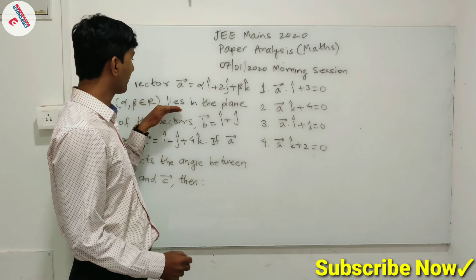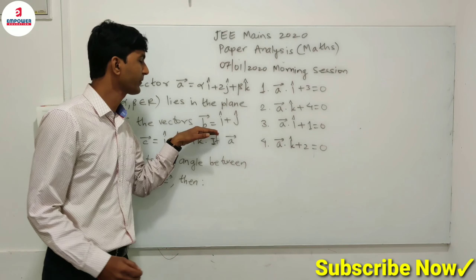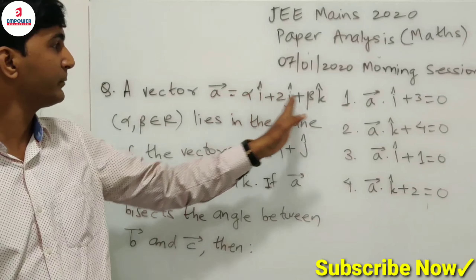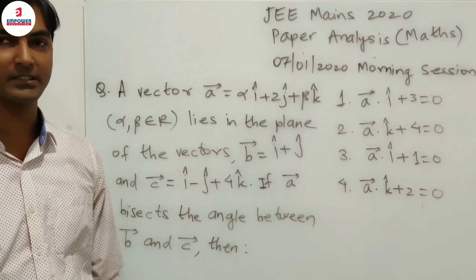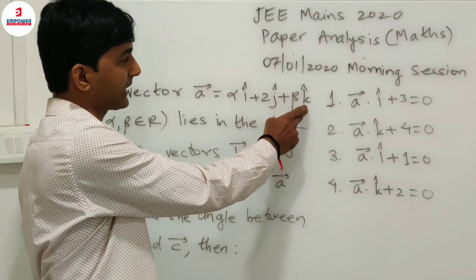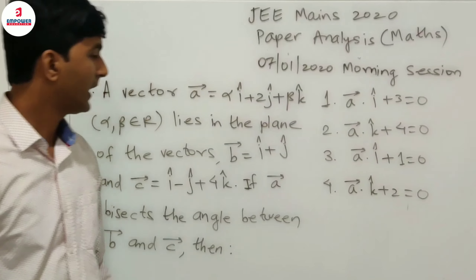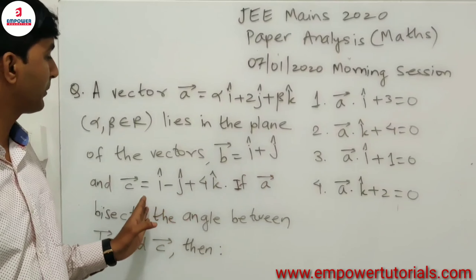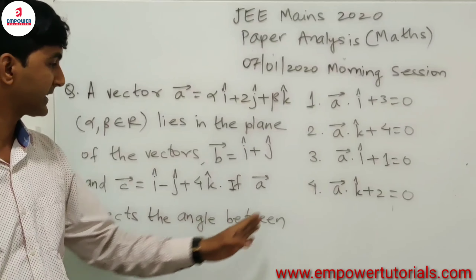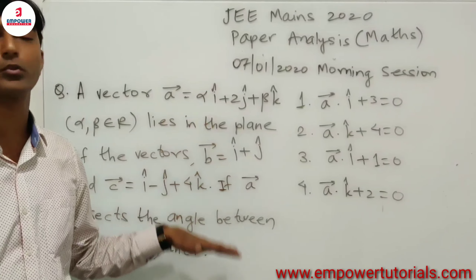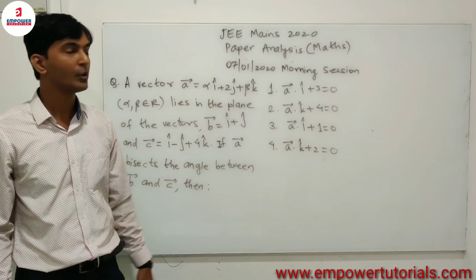This question is related to the topic of vectors. Vector **a** is given in terms of parameters as α·î + 2ĵ + β·k̂. There are two vectors **b** and **c** mentioned, and **a** is the angle bisector of these two vectors.